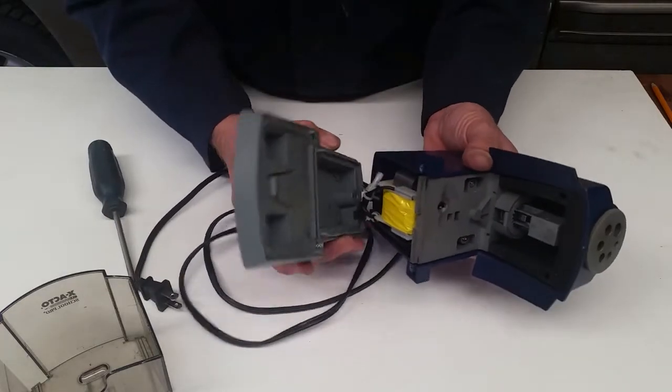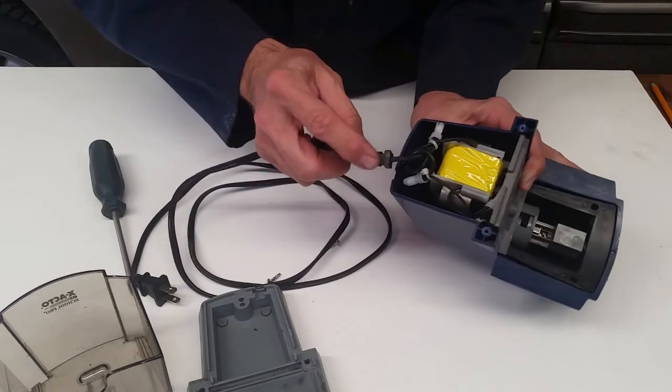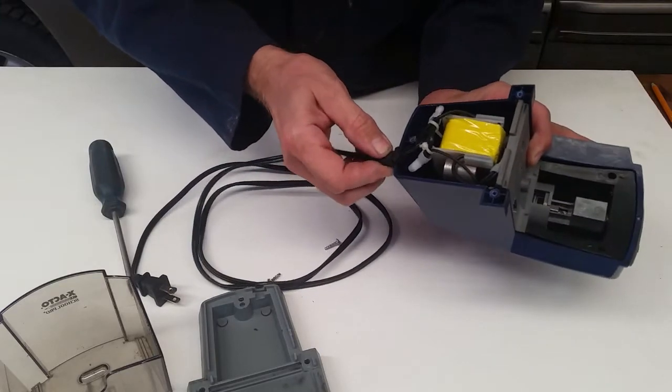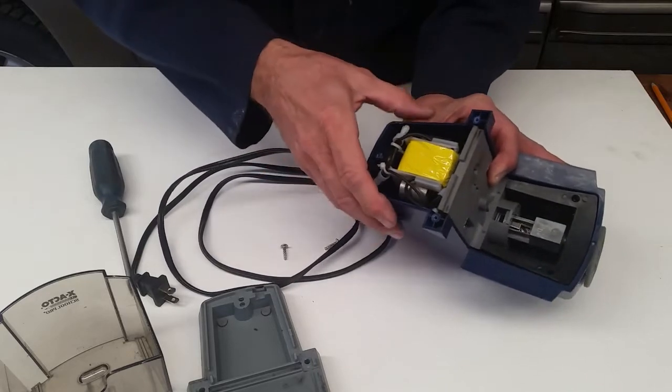So here we'll see that there is a strain relief right here. This is called a strain relief and it sits down in that pocket right there. So we just want to make sure we put that back when we go to put it all back together.